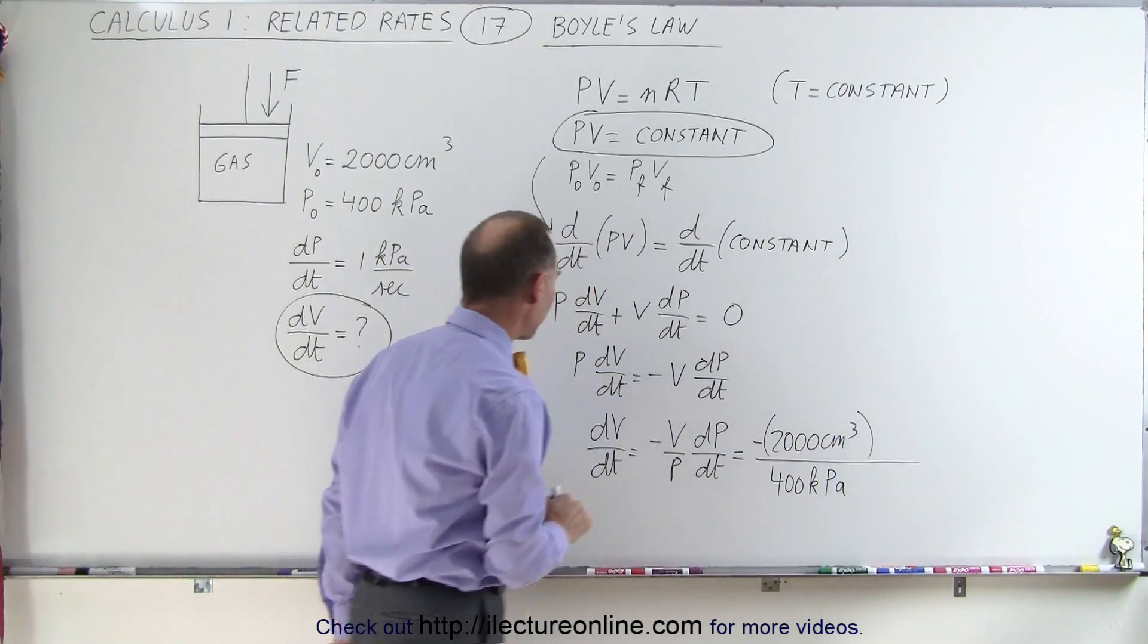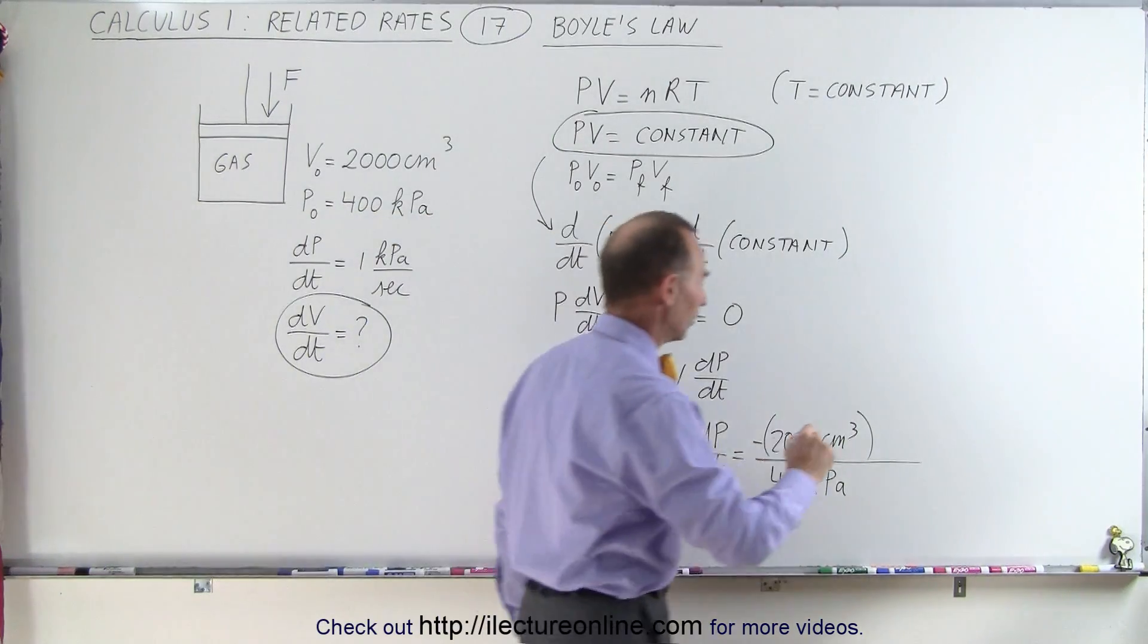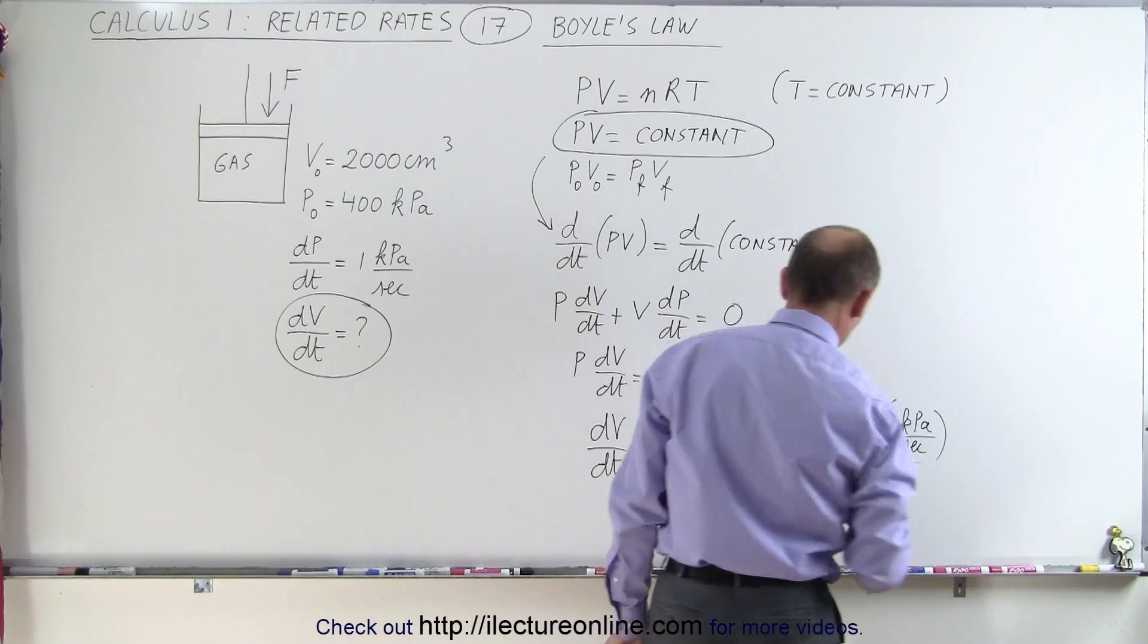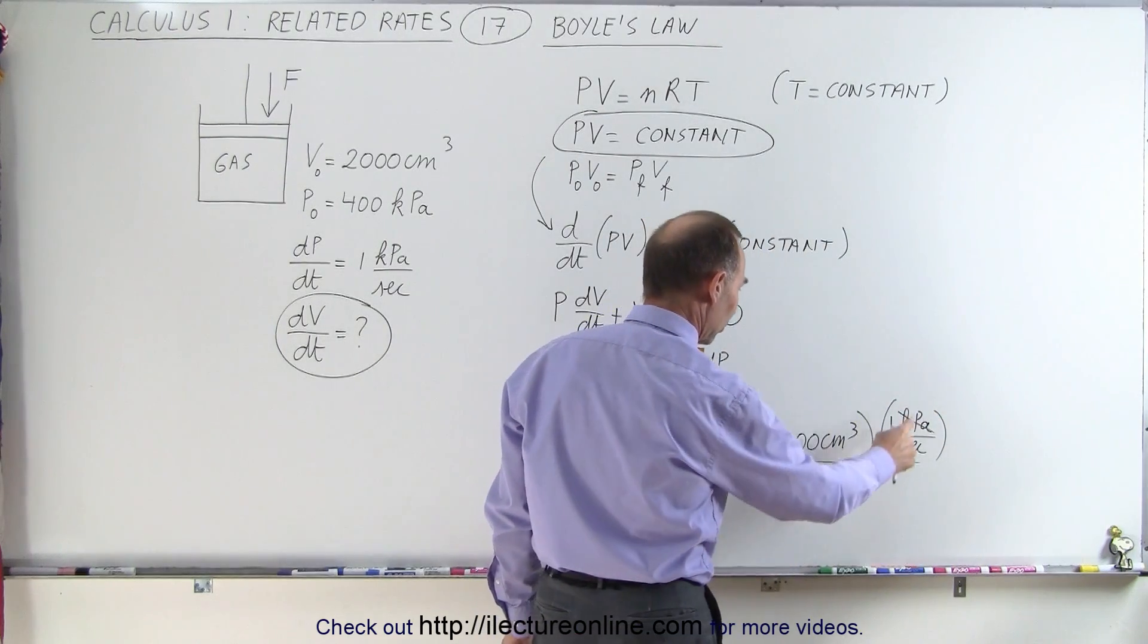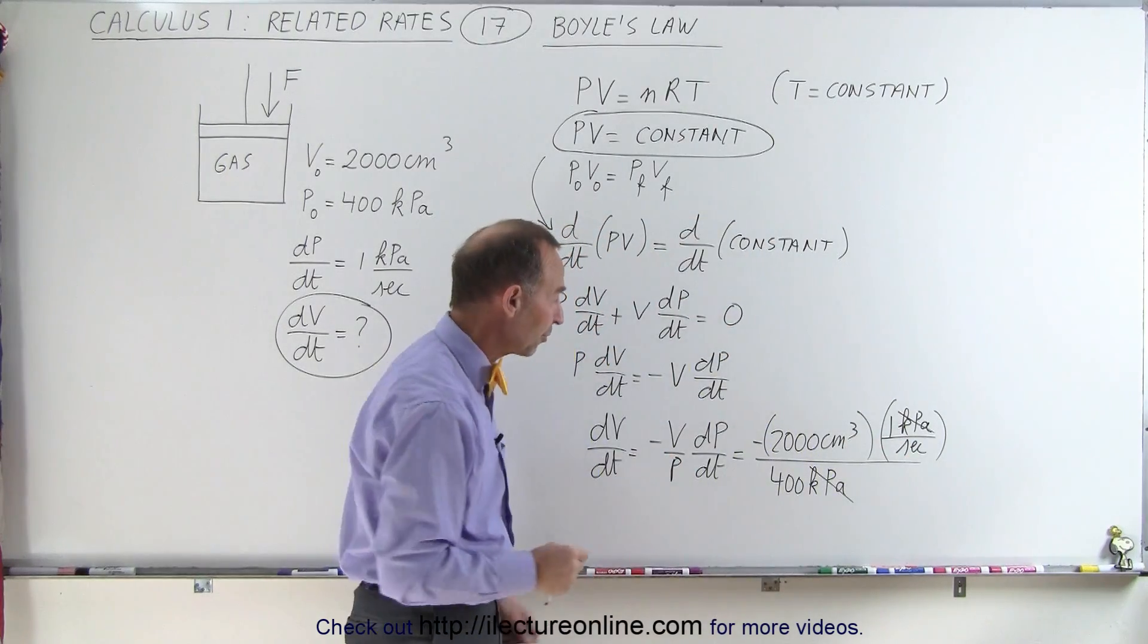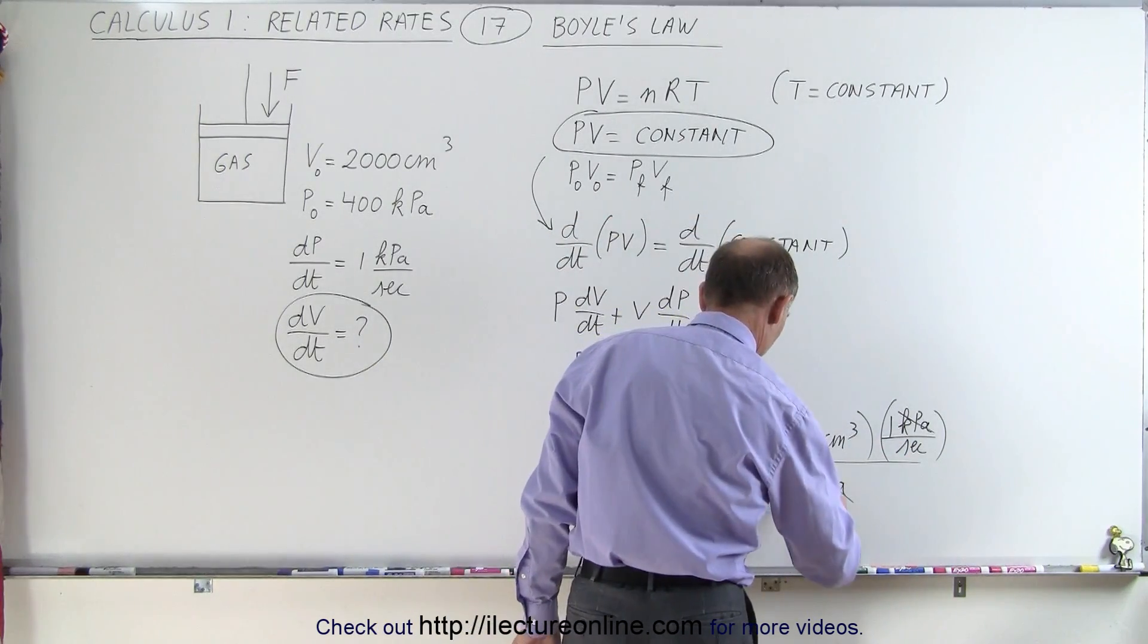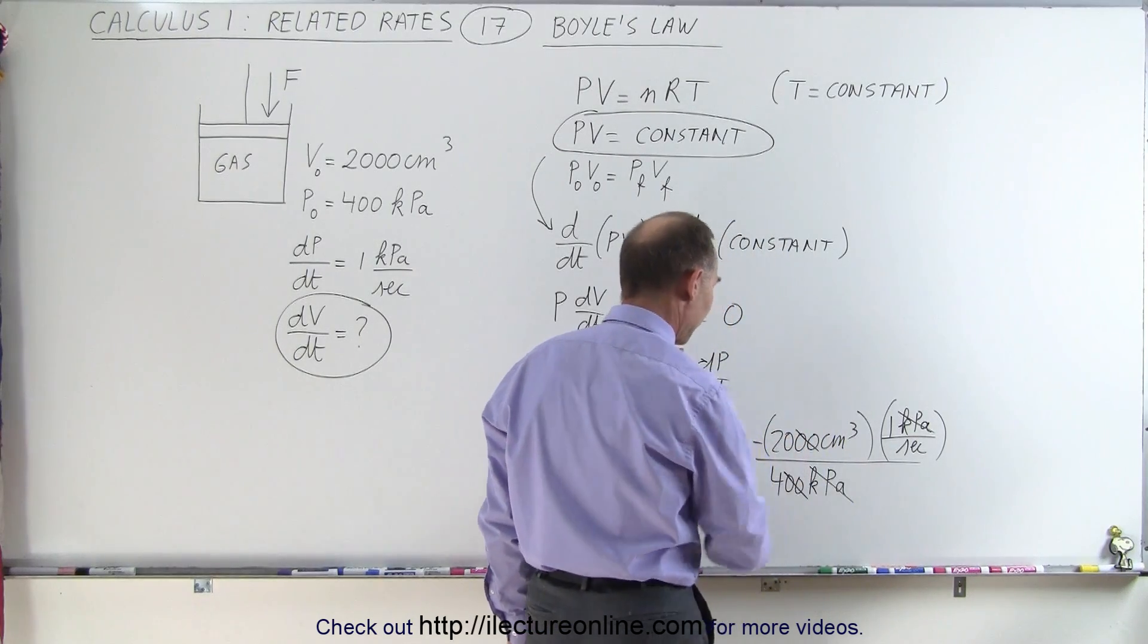And then we have to multiply that by the rate of change of the pressure, which is 1 kilopascal per second. Notice the kilopascals cancel out, and that leaves us with cubic centimeters per second, which is the change in volume over time. These two zeros cancel out those two zeros, and we have 20 divided by 4.